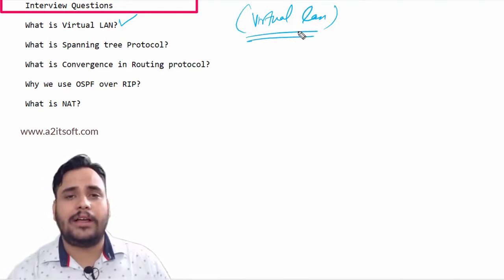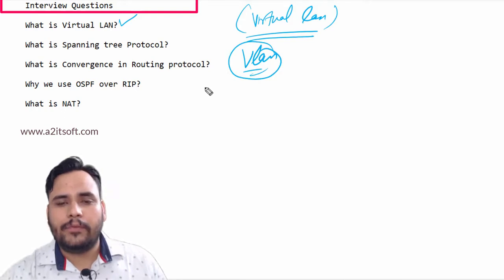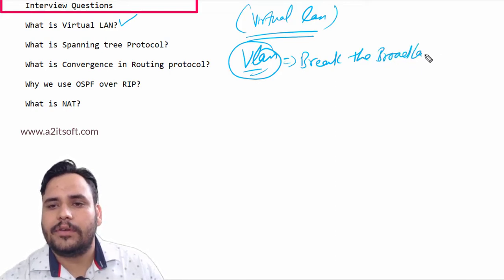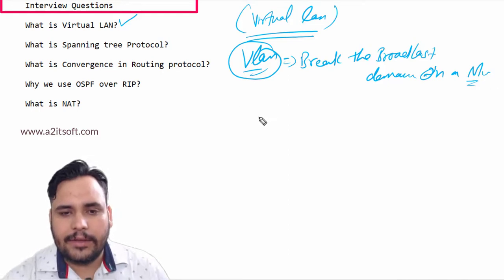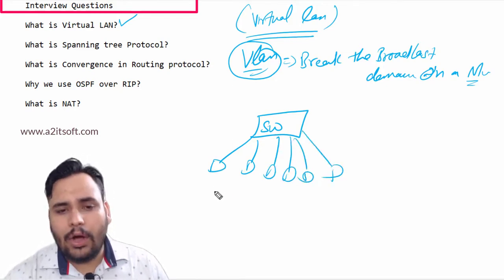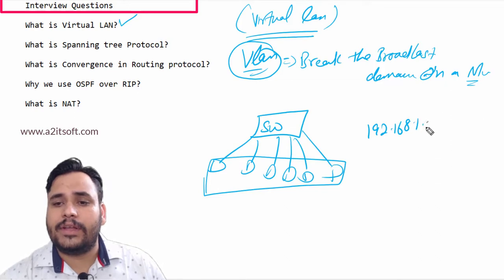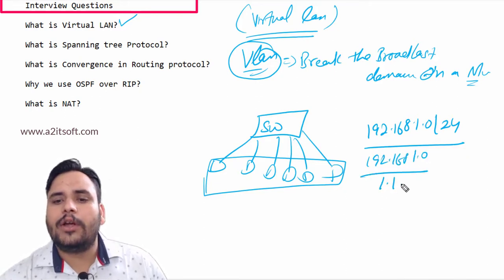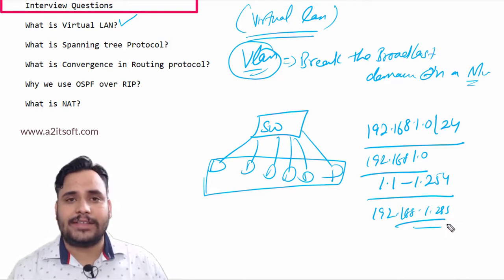This is an important question that most companies ask. Virtual LAN is known as VLAN. Basically, VLAN is used to break the broadcast domain of a switch on a network. For example, you have a switch connected with five to six PCs and all the PCs have the same network ID. If you're using IP address range 192.168.1.0/24, it has one network ID, 1.1 to 1.254 are the host IDs, and 192.168.1.255 is the broadcast ID.